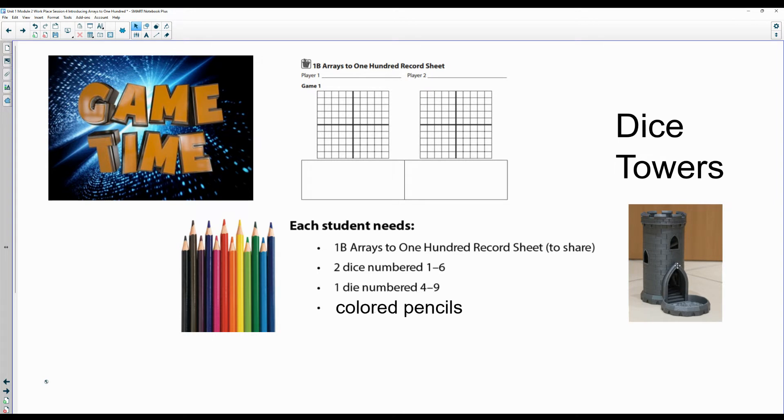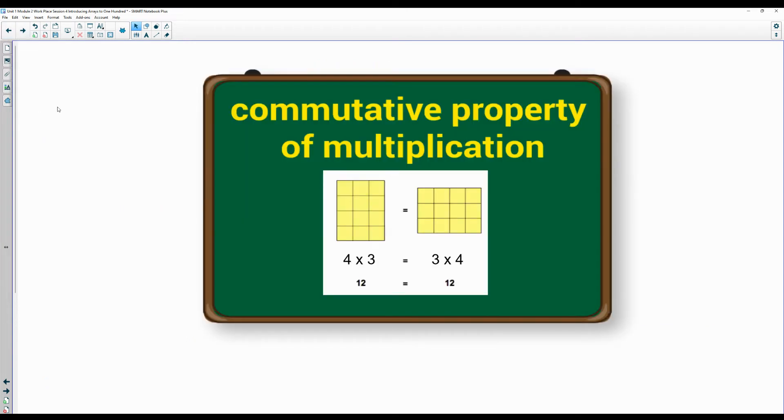Today you get to use the dice tower. Remember the commutative property of multiplication, that's going to be important today. Four rows of three - row, row your boats, one, two, three - four times three equals three times four. Remember you guys probably called this the turnaround fact. You can use either one today.